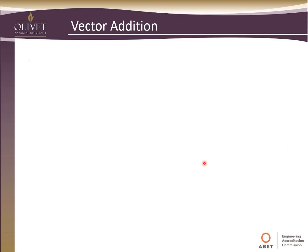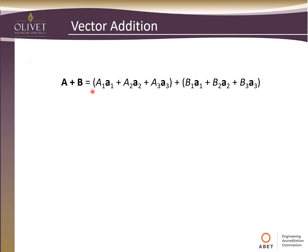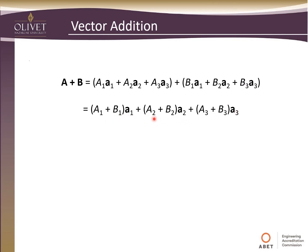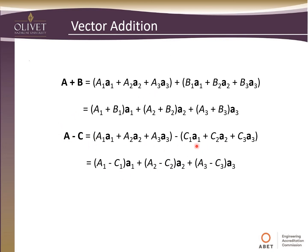What about addition of vectors? If we want A plus B, we write both vectors out longhand and combine like terms: A1 and B1 are both times A1, so we add those; A2 and B2 are both times A2; A3 and B3 are both times A3. The same is true for subtraction — for A minus C, we subtract like terms: A1 minus C1 times A1, A2 minus C2, and A3 minus C3. That gives our resulting vector.